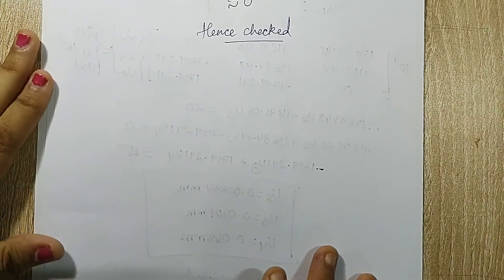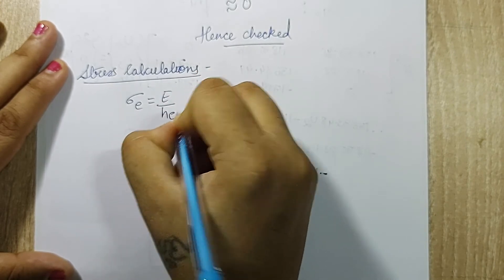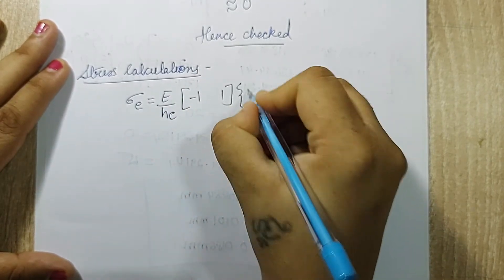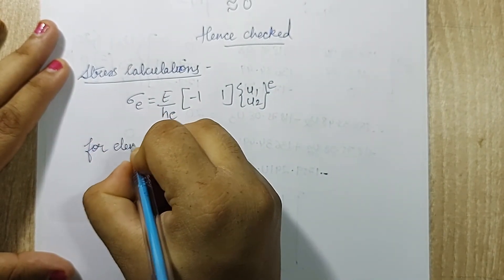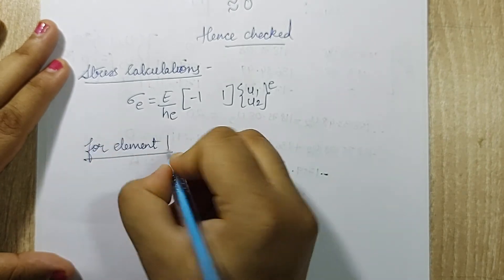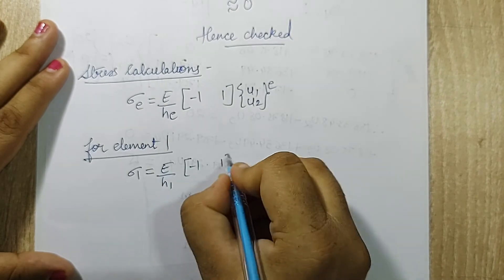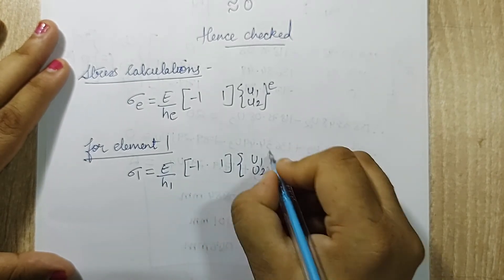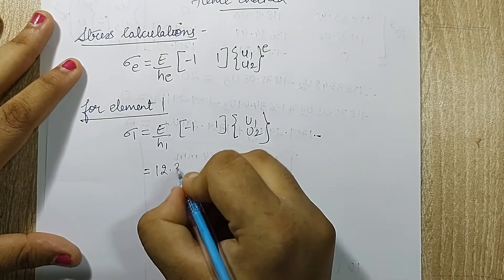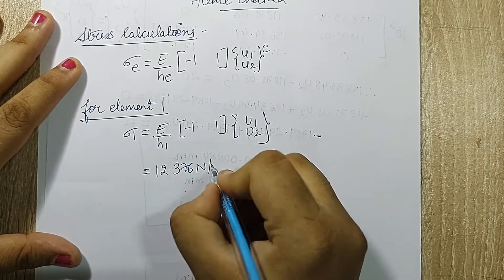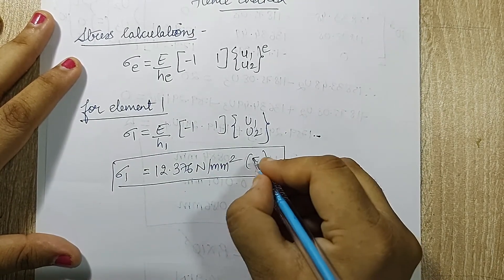Next I will go for stress calculations. The equation is σ_e = (E/h_e) × [−1  1] × {u1; u2}^e. For element 1, σ₁ = (E/h1) × [−1  1] × {u1; u2}. When I substitute, I get the answer as 12.376 N/mm². It is positive, so it is tensile.